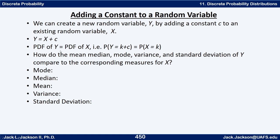The PDF of y is basically the same as the PDF of x. The probability that y equals k plus c is the same as the probability that x equals k. So the question is how do the mean, median, mode, variance, and standard deviation of y compare to the corresponding measures for x?